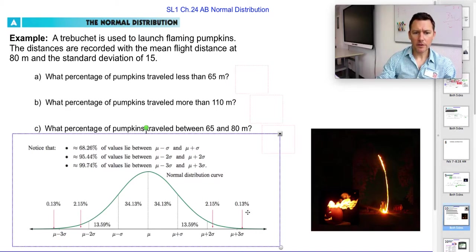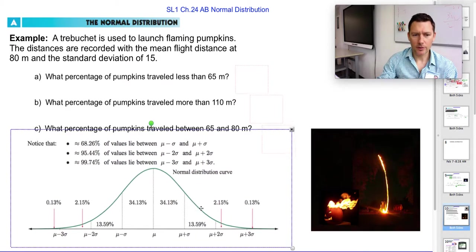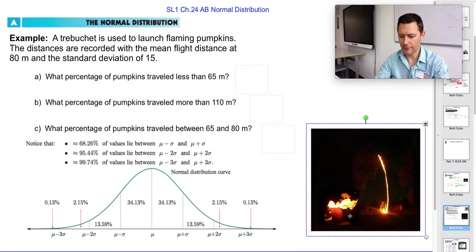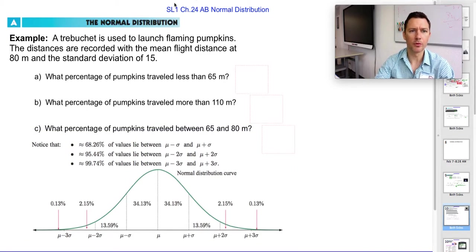So if you were thinking about it in terms of this, get our flaming pumpkins out of here, some room to breathe. We can visualize the average as 80, and the standard deviation as 15. So this distance should be 15, and also this distance should be 15, right?